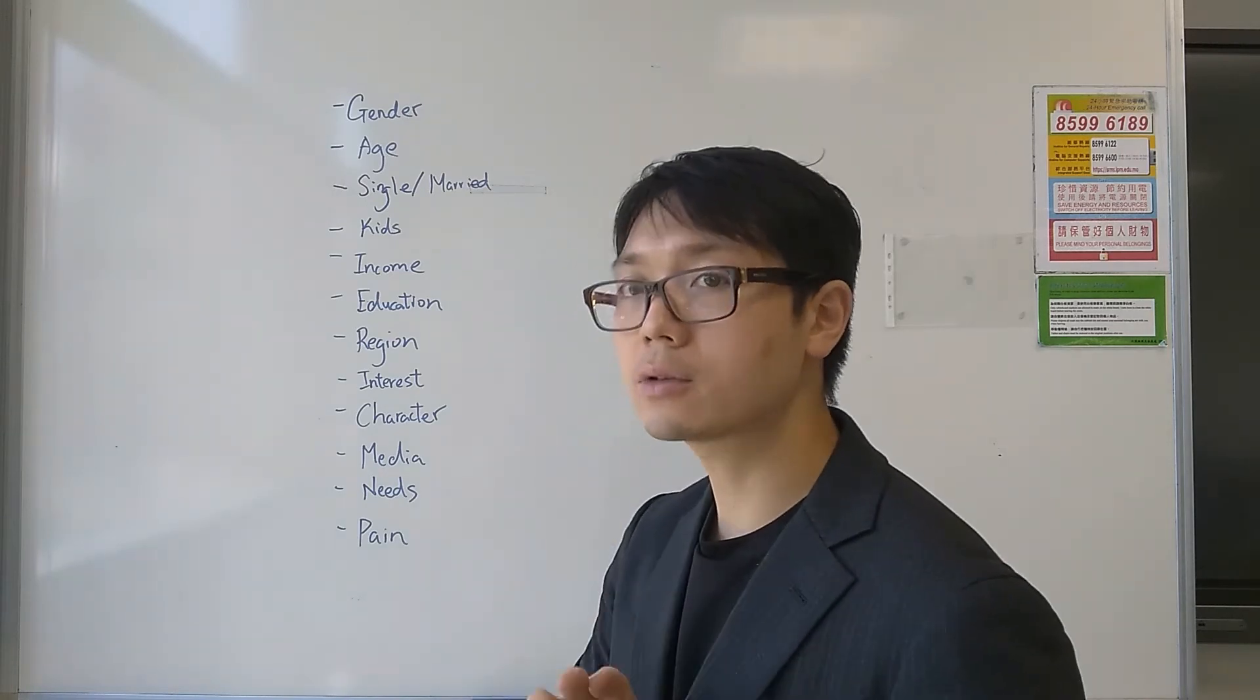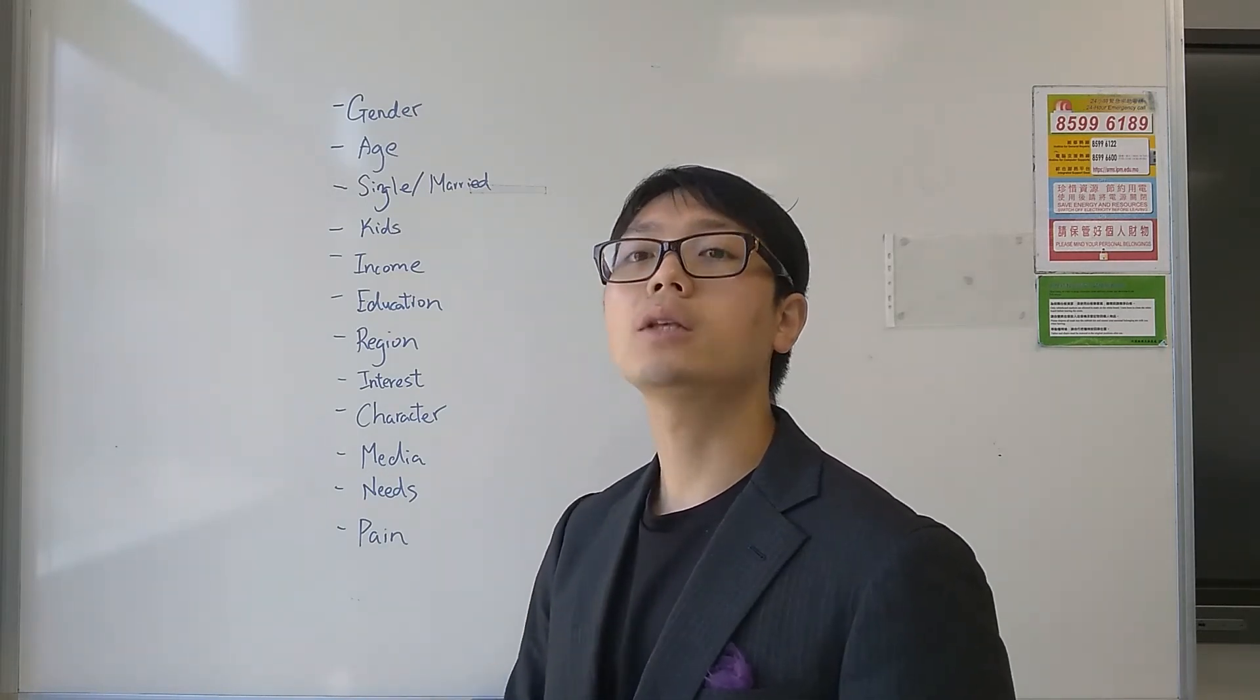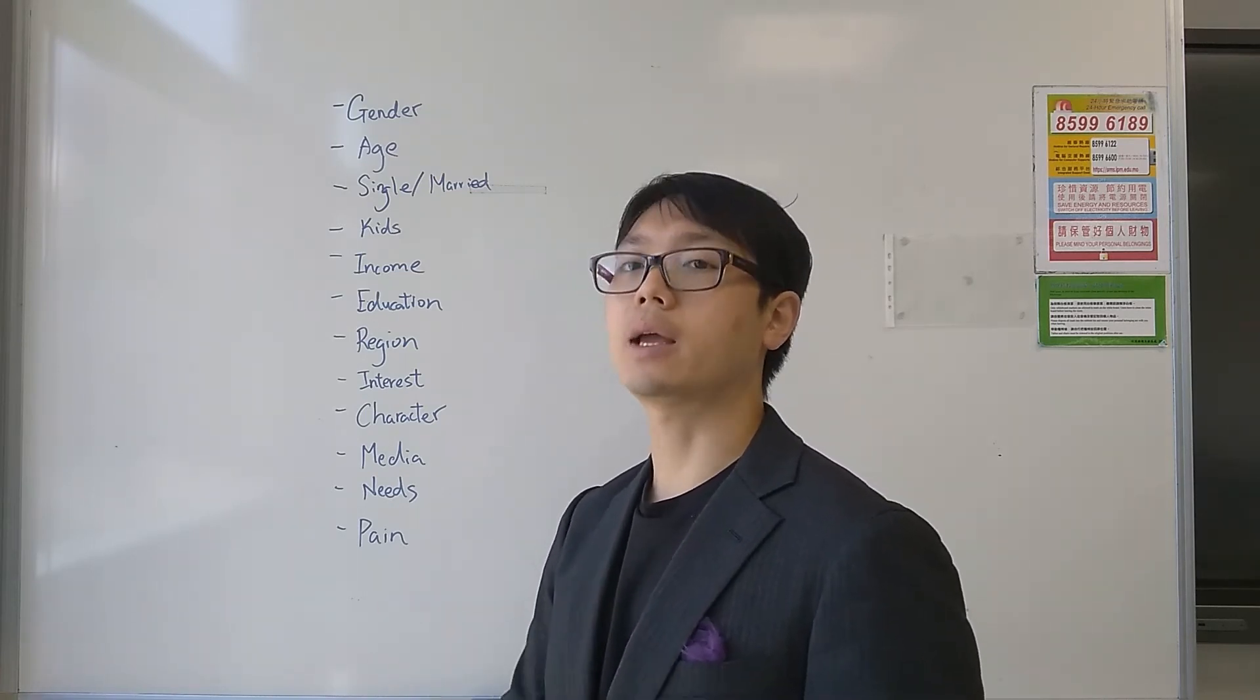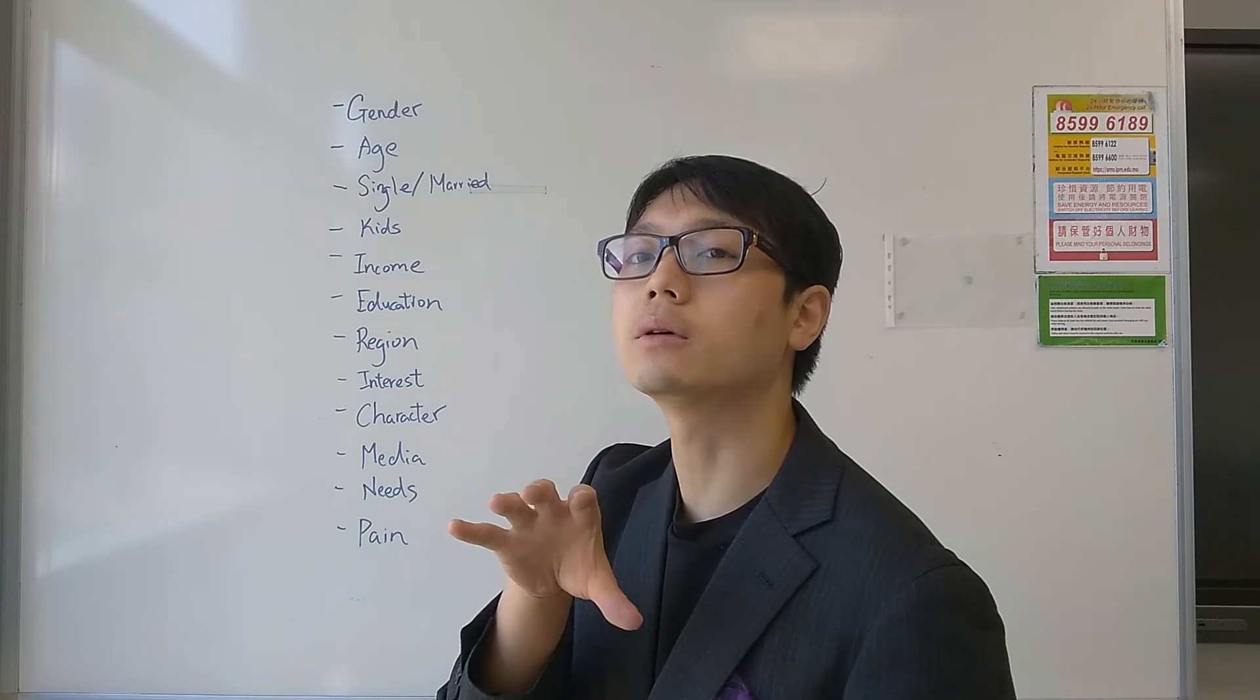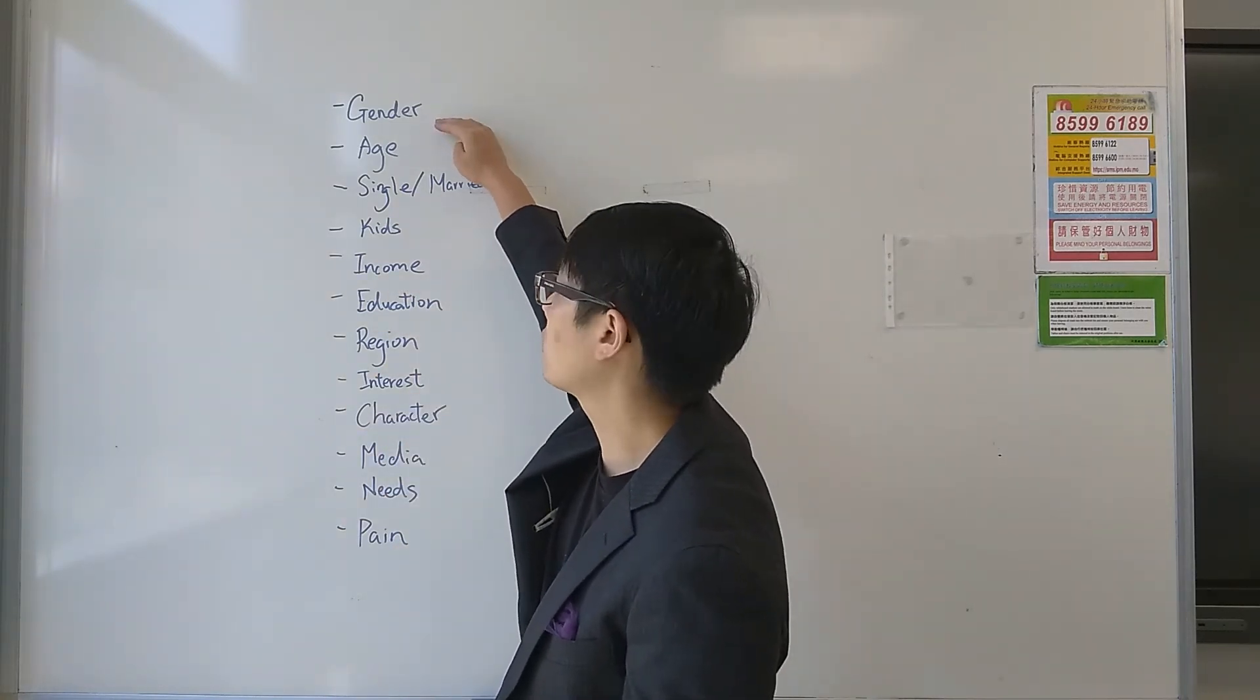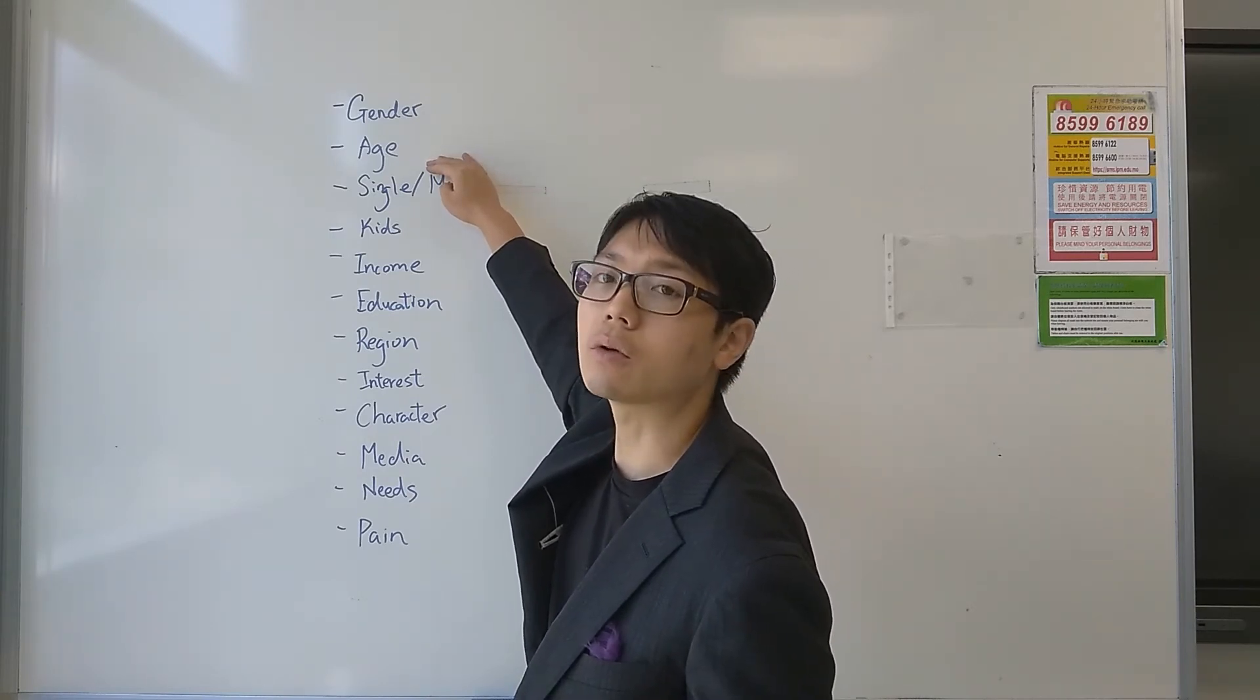Now, here's an example. If you want to sell, say like a red dress to young ladies. So, we already making an assumption on the profiles of the customers that female as a gender, age group is typically between 20 to even to 35.